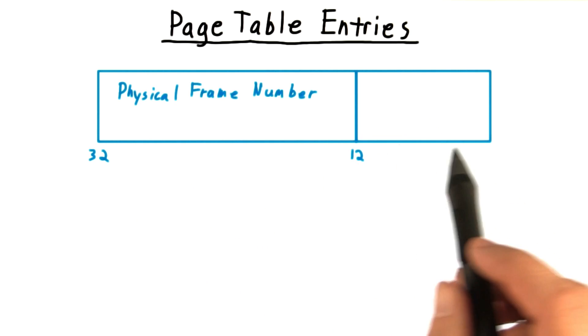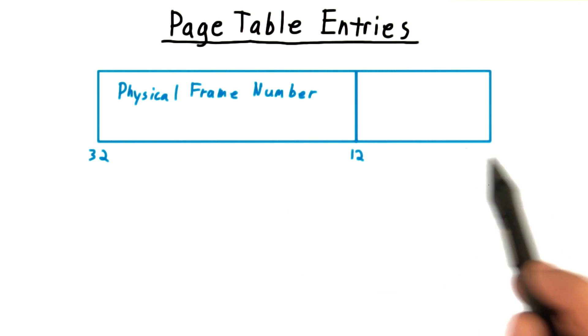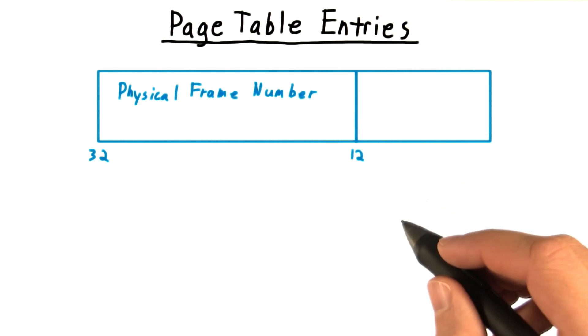With 4K pages, only 20 bits would be needed for the physical page frame. What do we do with the other 12 bits? Well, it turns out that there's lots of other information worth storing in the page table.